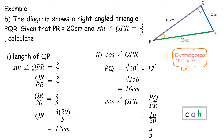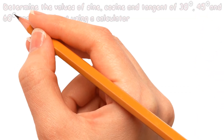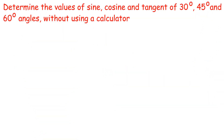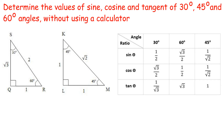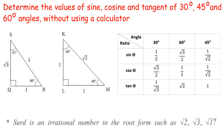Now we look at the sine, cosine and tangent of 30-degree, 45-degree and 60-degree angles without using a calculator. A surd is an irrational number in root form, such as square root 2, square root 3, square root 17. Square root 3 is read as 'surd 3'.